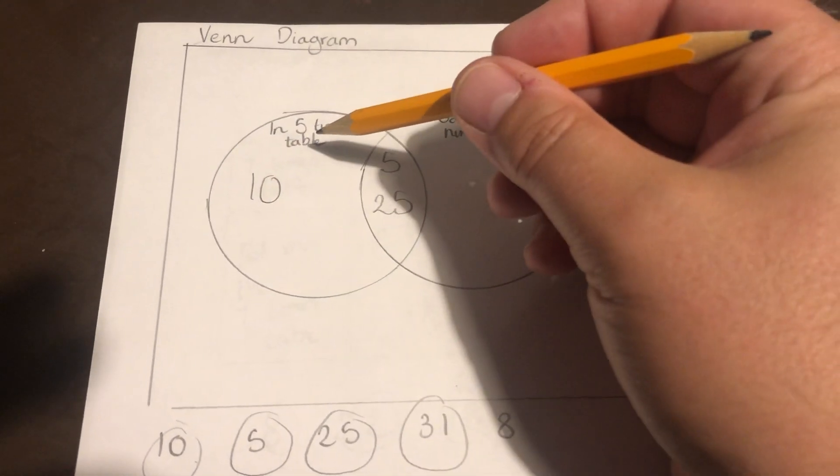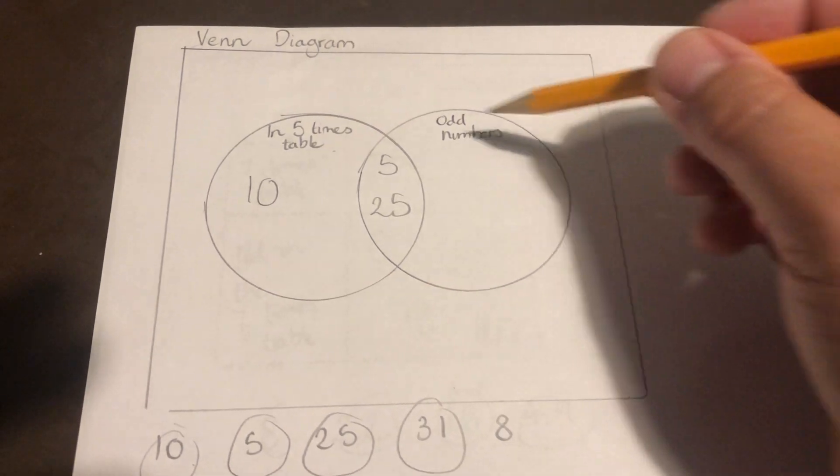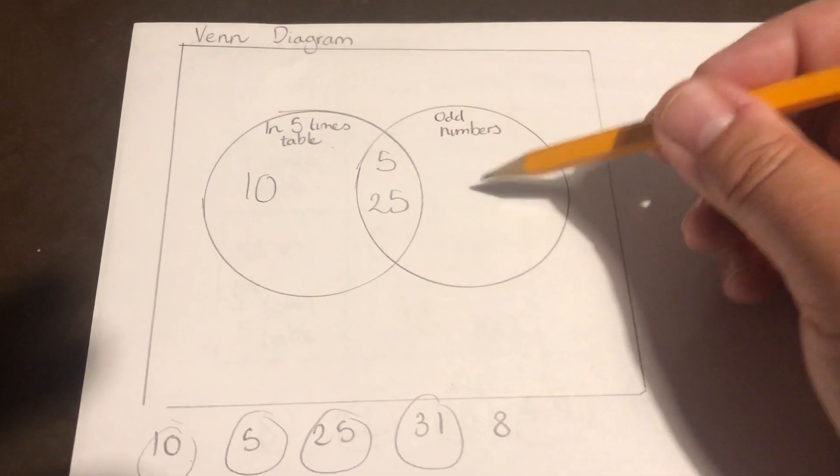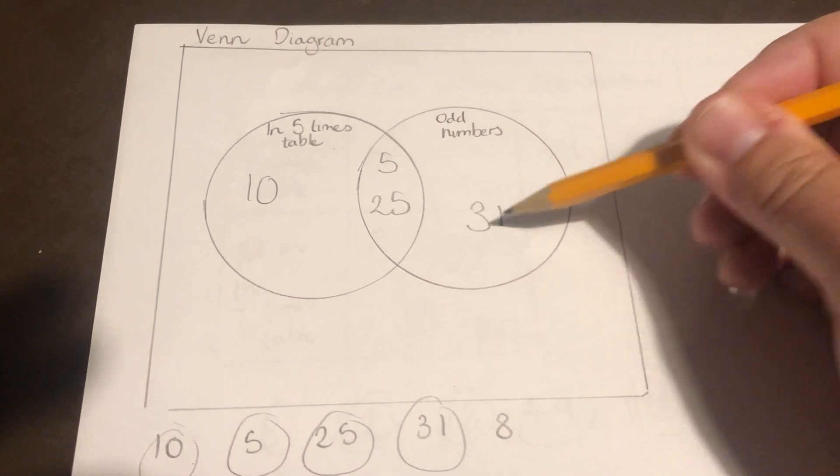31 is not in the five times table, so it can't go in that circle. It has to go in this circle, but not in the overlap, just on its own.